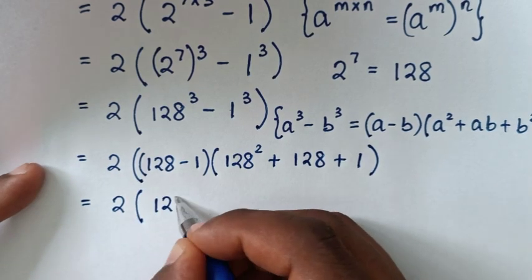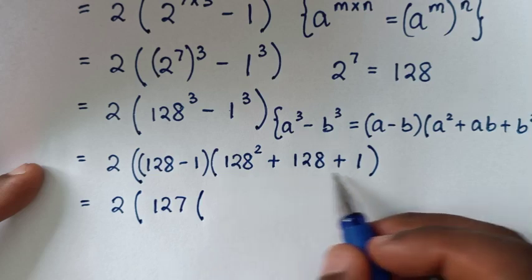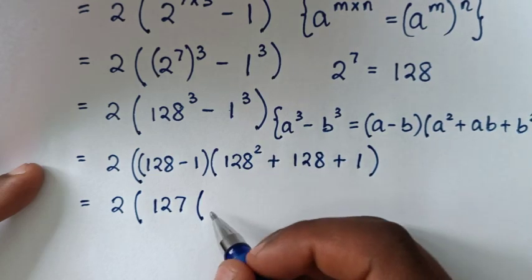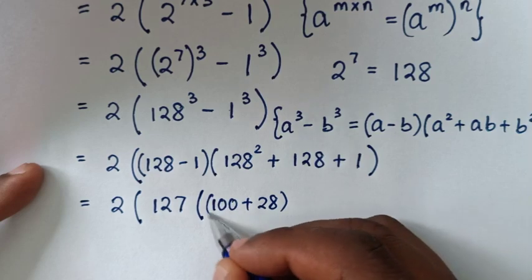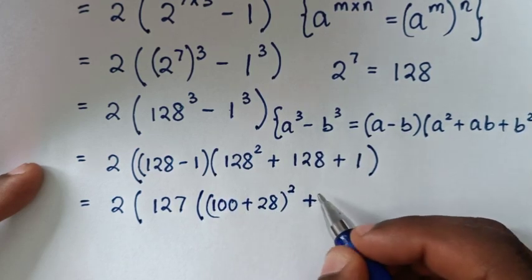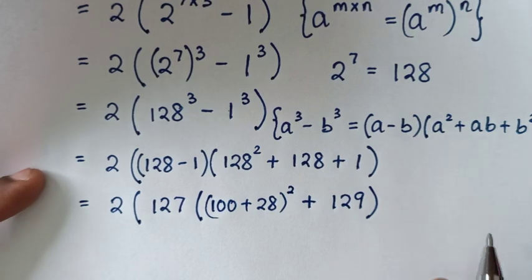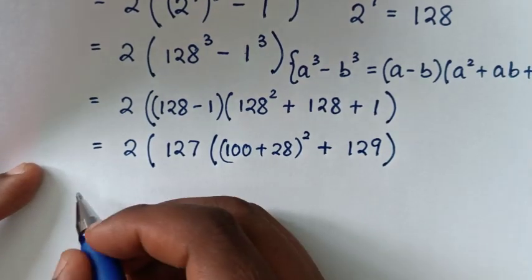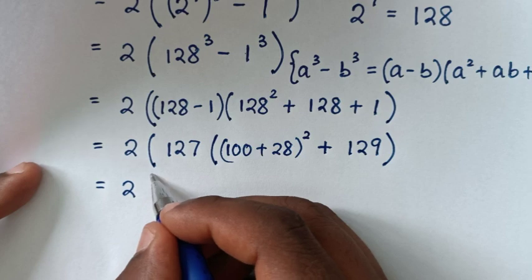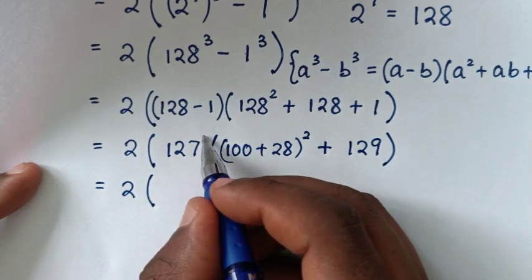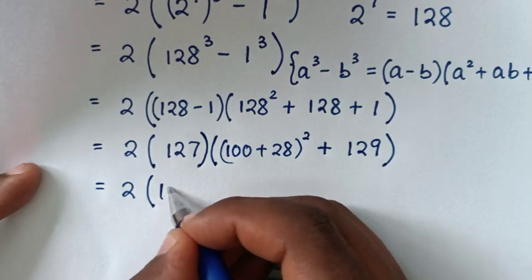128 minus 1 is 127. Then for the second part, it will be 128 squared, which is the same as 100 plus 28, bracket, squared. Then plus 128 times 1, which is 128, plus 1 squared, which gives us 129, inside the bracket.